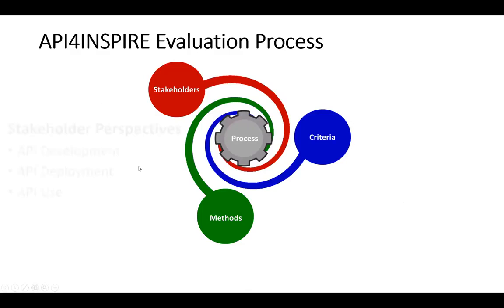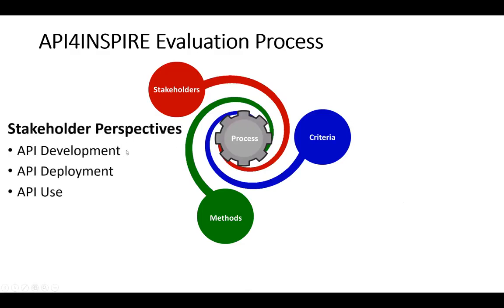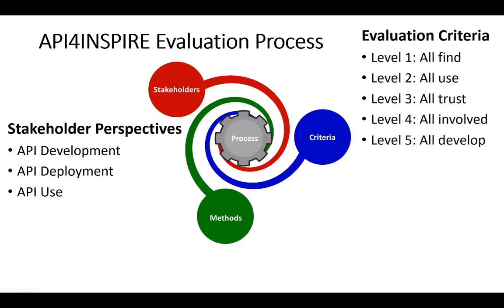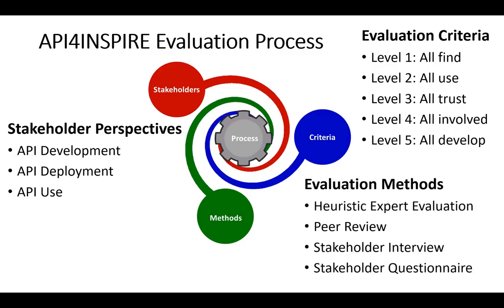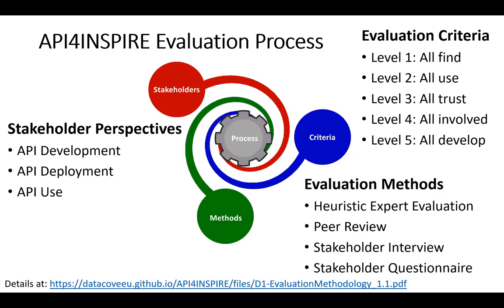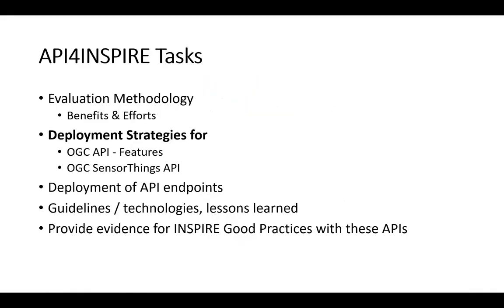Pulling all of this together: we've got our stakeholder perspectives — API development, API deployment, and API use. We have our five levels of evaluation criteria and our four different evaluation methods. We've done a three-dimensional matrix determining which methods are most suited for which stakeholder perspective and which criteria. The full details are available at the link — the slides will be available and you can download our first deliverable for all the details. That's the end of the evaluation methodology. Now going on to our deployment strategies — we have strategies for how to get your things online both for OGC API Features and SensorThings API.